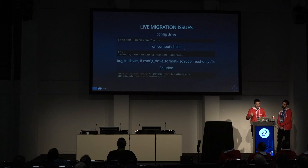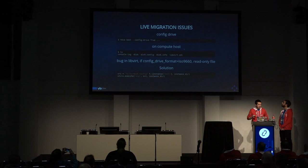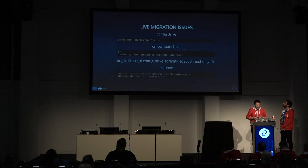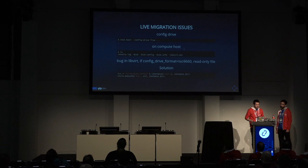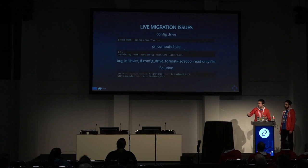Another issue we had was about config drive. Config drive is an option you can pass to nova boot or openstack server create. It creates a disk config file on the compute host which the instance uses to get metadata instead of making an HTTP call. But in libvirt, if this file is in a specific format it's considered read-only and libvirt is not able to migrate this file. The solution — somewhat dirty but it works — is to use SCP before doing the live migration to copy this file to the destination host, so libvirt sees the file is already there. This is a sample line of code that we cherry-picked back to Juno; it's available in the Nova codebase.